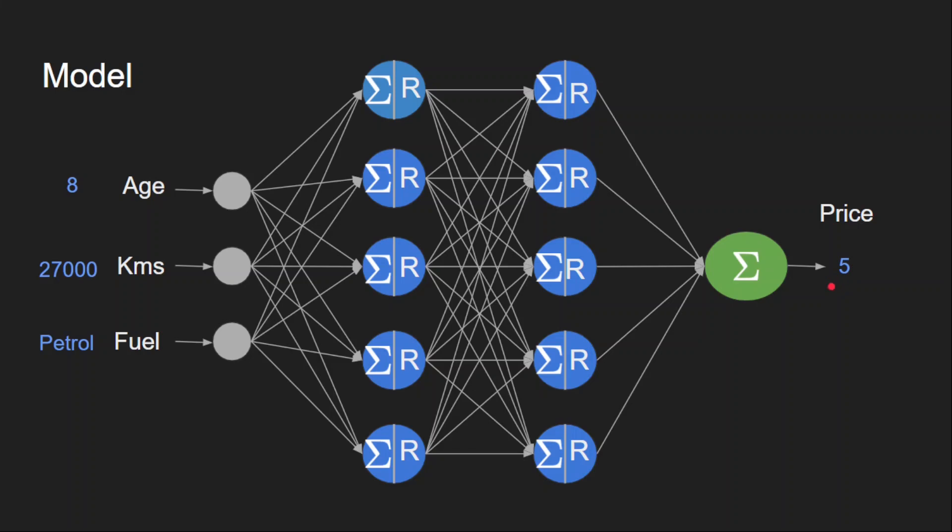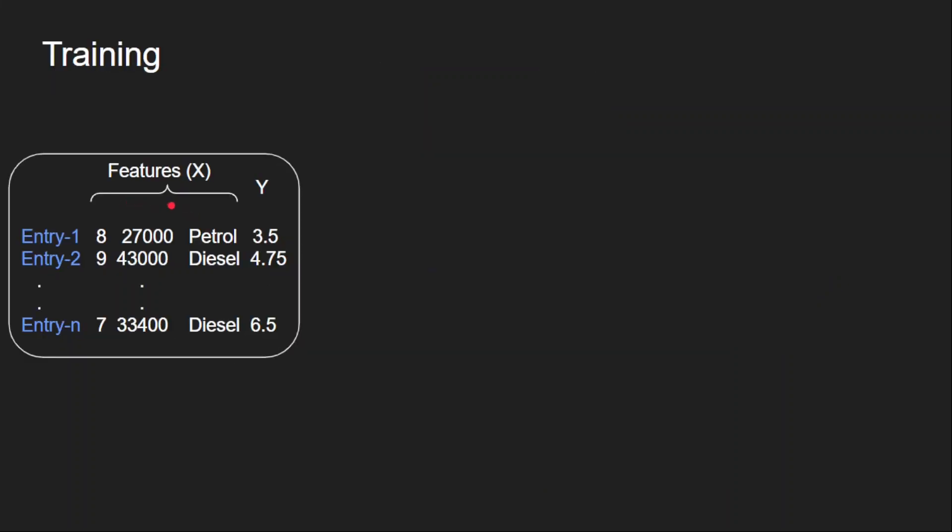For that, we need to calculate the error or loss. And the objective of this whole training is to minimize that loss. During the training, we have the seen price available to us. This is how our training data looks like. So, the first three are the actual input features going to the network. And the last one, which is the selling price, is the target for those features.